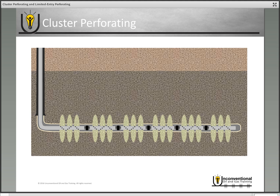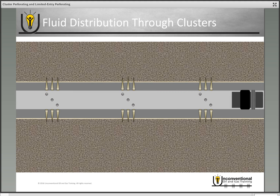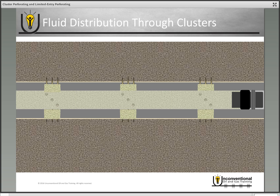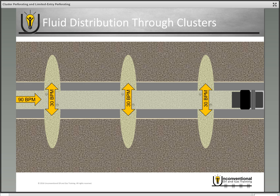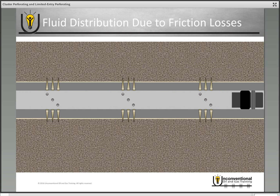Let's zoom in and look at one of these stages during the frac job. We've got our plug already set and three sets of clusters perforated into the casing. When we begin our frac job, we assume even frac distribution — meaning the fluid is distributed evenly throughout each cluster. For example, if you have 90 barrels per minute pumped at surface, you're assuming 30 barrels per minute out of each cluster.